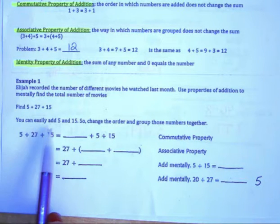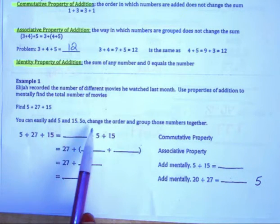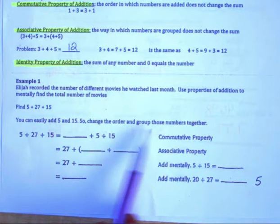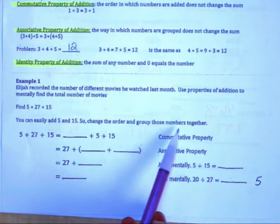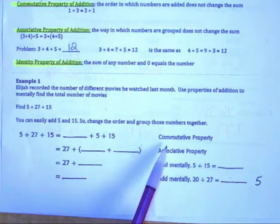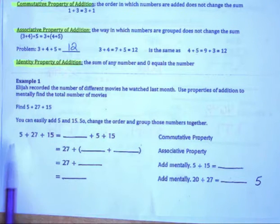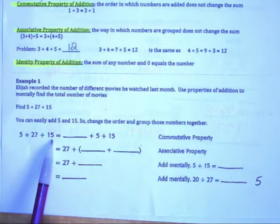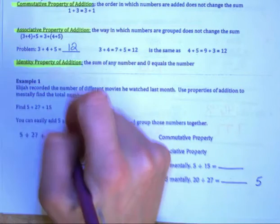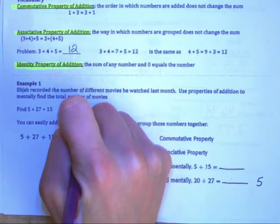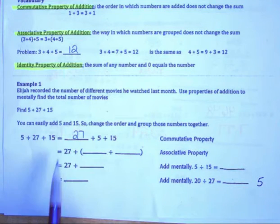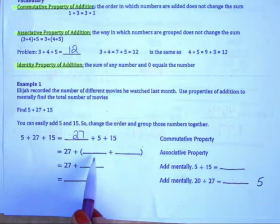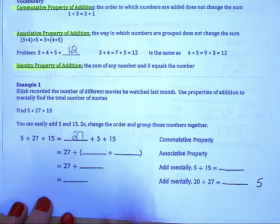You can easily add 5 and 15. So we are going to change the order and then group those numbers. Change the order and then group those two numbers together. That is the commutative property. So instead of having 5 plus 27 plus 15, we are going to rearrange that to 27 plus 5 plus 15. Now if we want to group 5 and 15 together, we can do that by using the associative property.